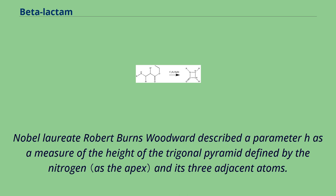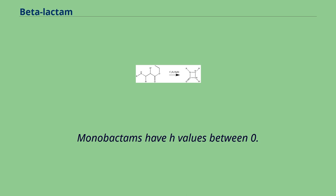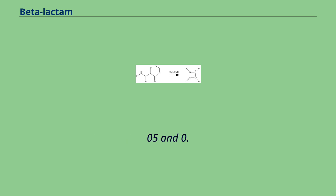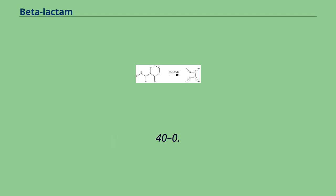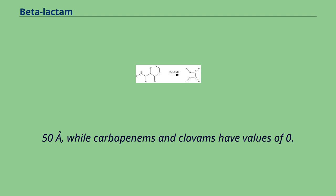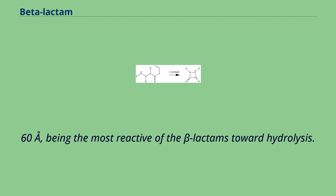Nobel laureate Robert Burns Woodward described a parameter H as a measure of the height of the trigonal pyramid defined by the nitrogen and its three adjacent atoms. H corresponds to the strength of the beta-lactam bond, with lower numbers being stronger and less reactive. Monobactams have H values between 0.05 and 0.10 Å; cephams have values of 0.20 to 0.25 Å; penams have values in the range 0.40 to 0.50 Å; while carbapenams and clavams have values of 0.50 to 0.60 Å, being the most reactive of the beta-lactams toward hydrolysis.